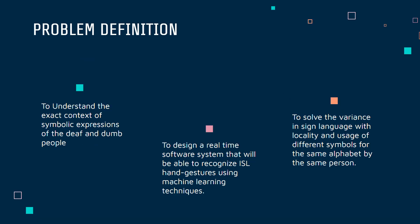So before we go ahead, we need to understand the problem definition. Number one, we are trying to understand the exact context of symbolic expressions of deaf and dumb people. Number two, we are trying to design a real-time software system that will be able to recognize Indian sign language gestures.